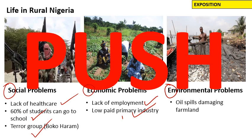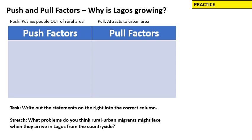Looking at environmental problems: oil spills are damaging farmland. That would push people out of living near their farmland if it was covered in oil, because they wouldn't be able to grow crops. Oil spills are common in Nigeria because a large transnational company called Shell operates in rural Nigeria and often has oil spills damaging farmland. All of these things are pushing people out of the countryside of Nigeria.